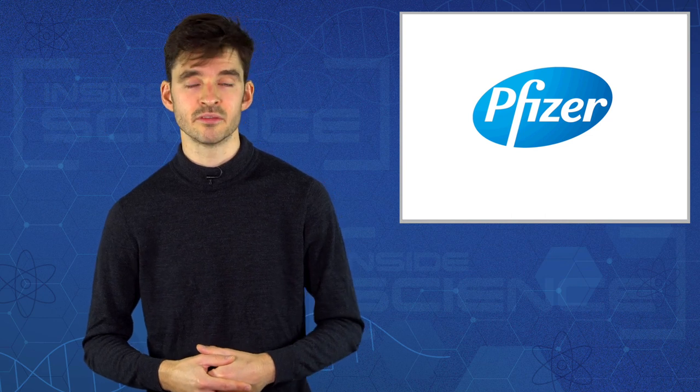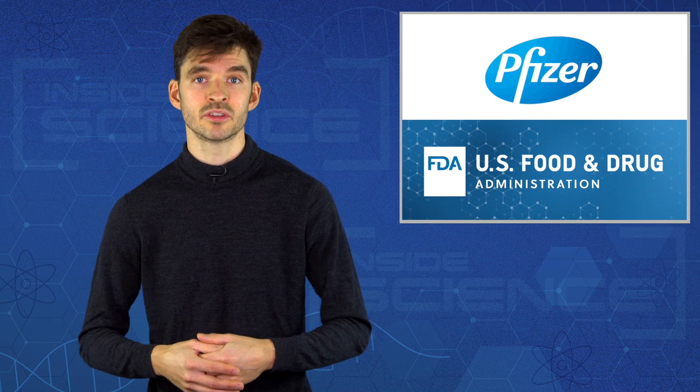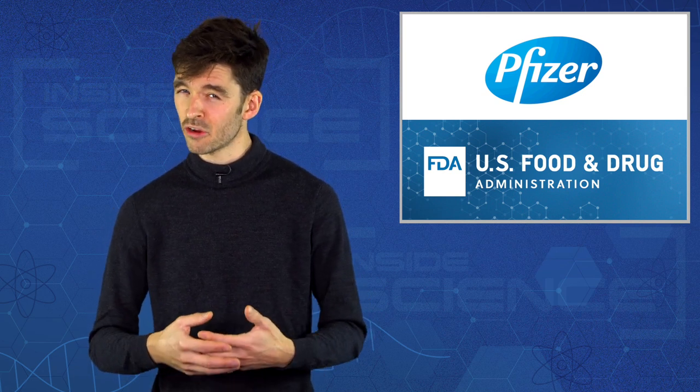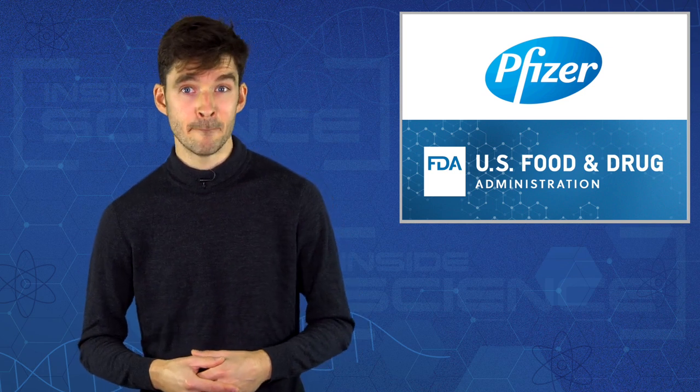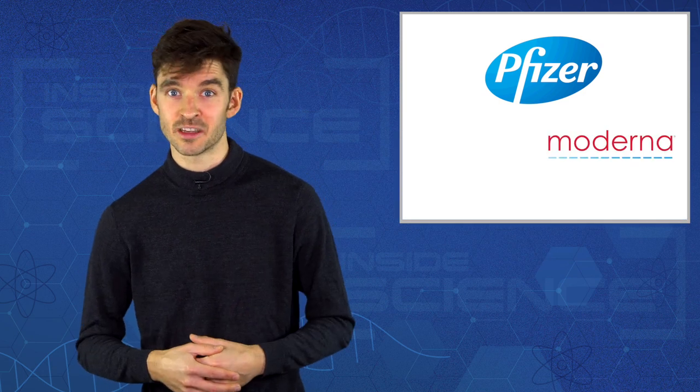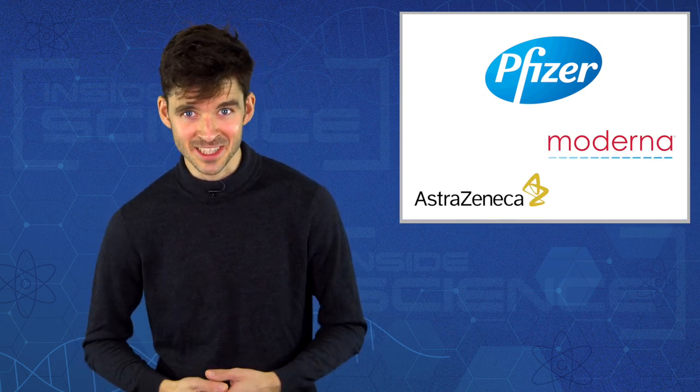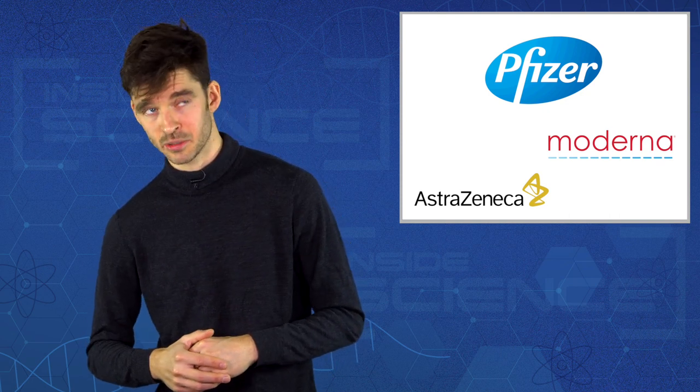But things are still moving fast. Pfizer have already applied for emergency use authorization from the US FDA. That could allow their vaccine to be used before completing the normal tests. And once permission is given, they are ready to go. Pfizer say they could produce 1.3 billion doses by the end of next year. Moderna say they could produce 1 billion, and AstraZeneca say 3 billion doses, although each vaccine requires 2 doses per person to be effective.